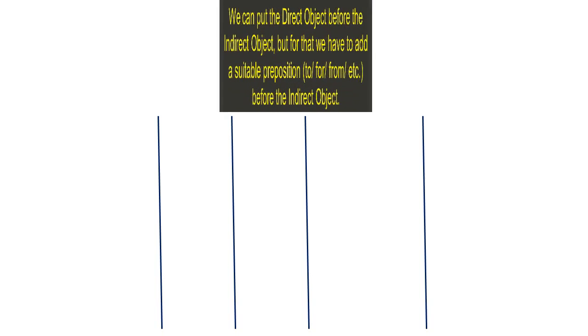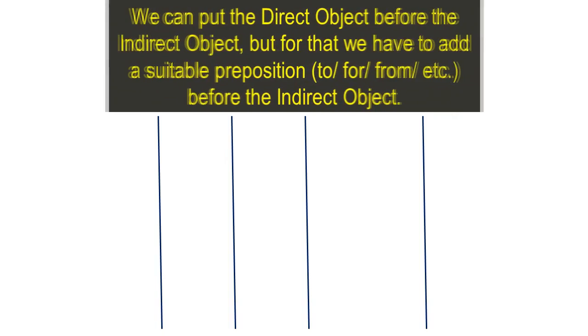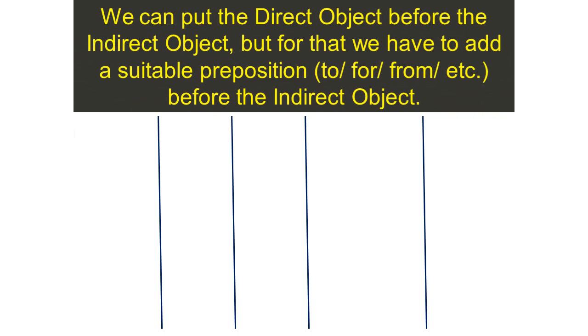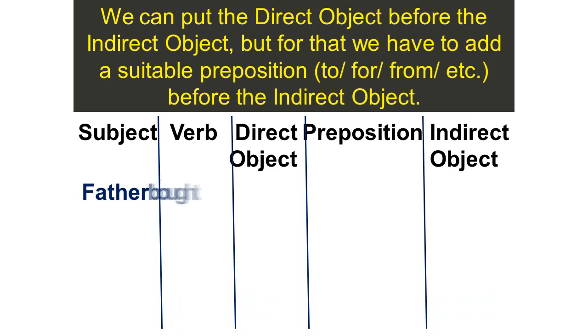We can put the direct object before the indirect object, but for that we have to add a suitable preposition: to, for, from, et cetera, before the indirect object. Subject, verb, direct object, preposition, indirect object. Father bought a pen for me.